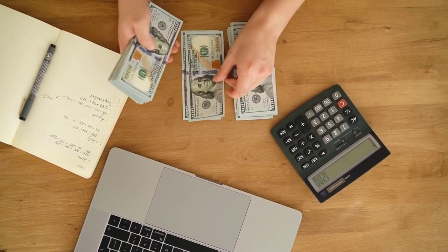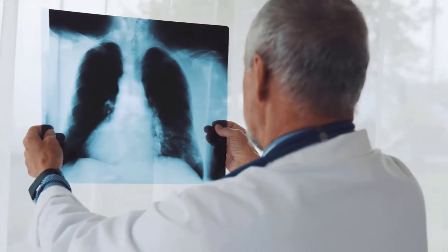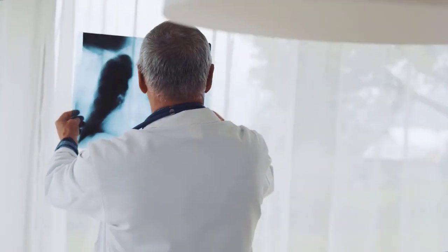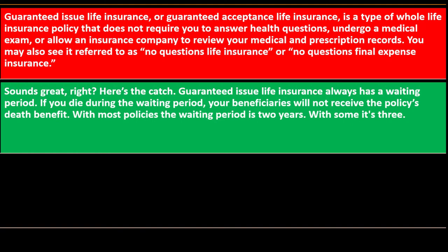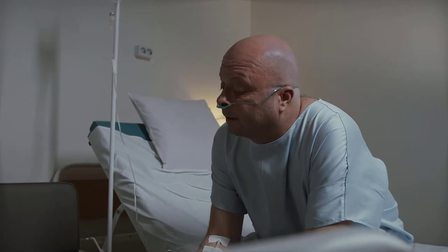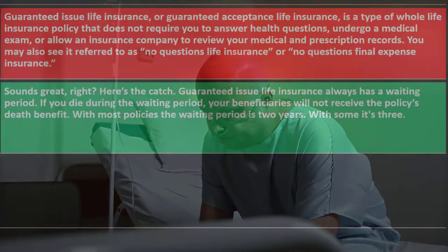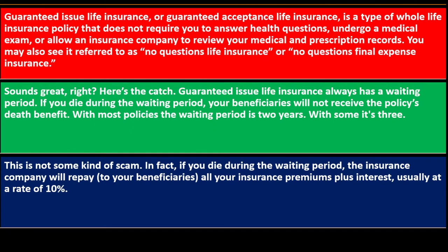With most policies the waiting period is two years — with some it's three. So if you're on your deathbed and buy the insurance without a medical exam, you'd have to hold on for two to three years before dying for the benefit to pay out. This is not a scam: if you die during the waiting period, the insurance company will repay your beneficiaries all your insurance premiums plus interest, usually at a rate of 10%. So your beneficiaries will still get something, just less than you'd like.